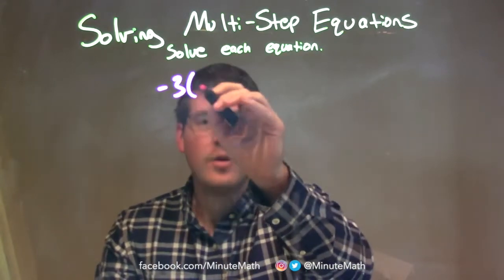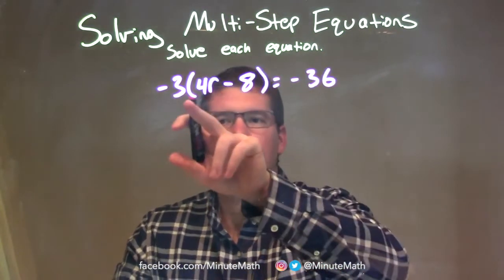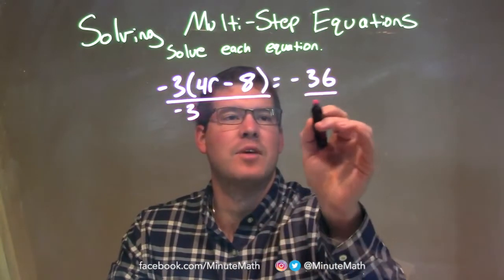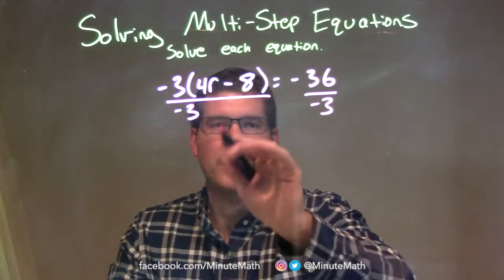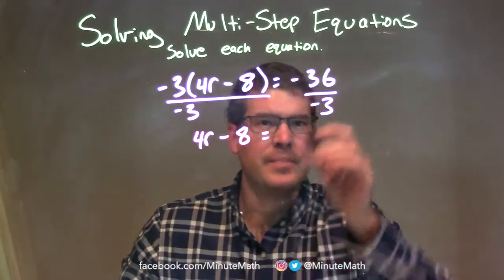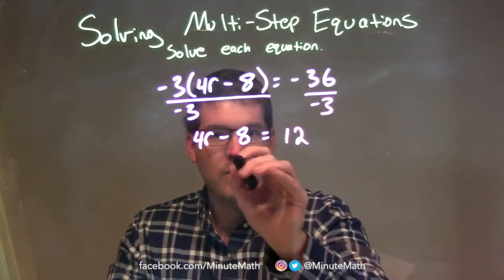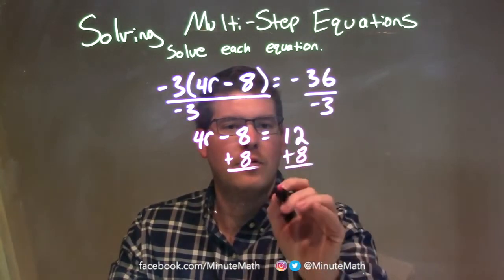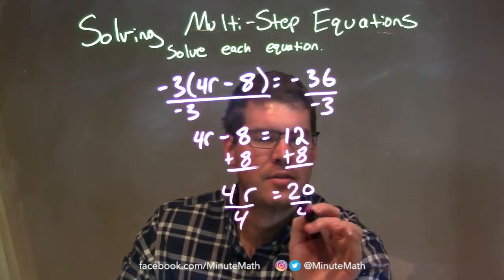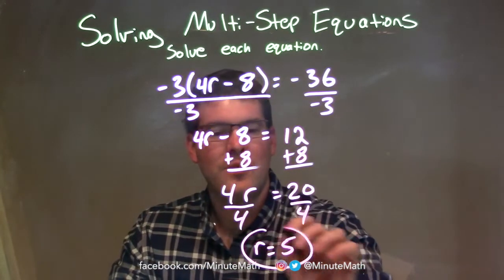Negative 3 times (4r minus 8) equals negative 36. I see multiplication — negative 3 times the parenthesis. I'm going to divide by negative 3 on both sides, so I don't have to distribute. That leaves 4r minus 8 on the left. On the right, negative 36 divided by negative 3 is positive 12. Then I add 8 to both sides: 12 plus 8 is 20, and we have 4r. I divide by 4 on both sides, leaving r equals 20 divided by 4, which is 5. Our final answer is r equals 5.